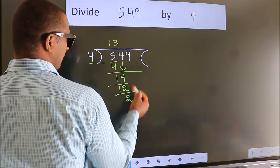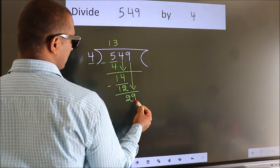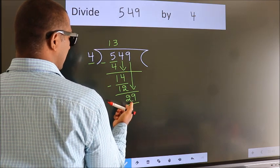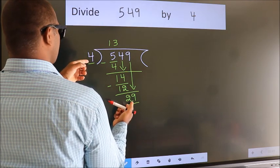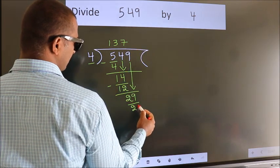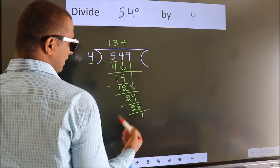After this bring down the beside number. So 9 down. So 29. A number close to 29 in 4 table is 4 sevens 28. Now we subtract. We get 1.